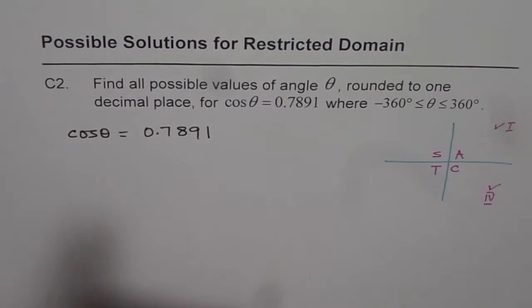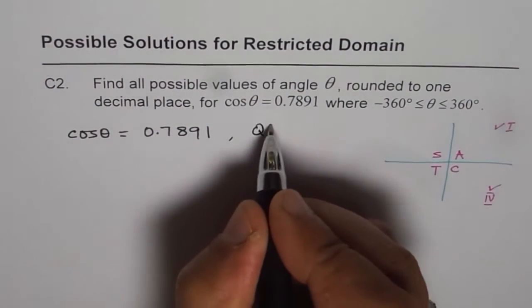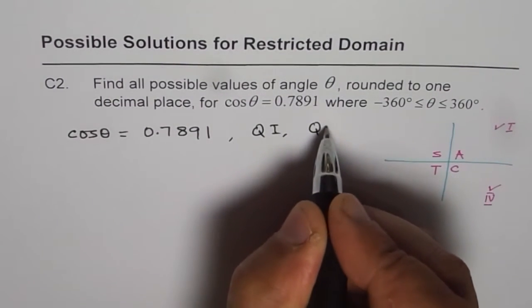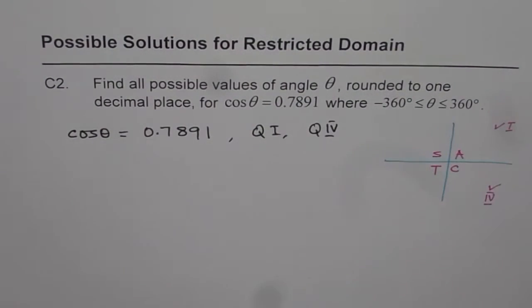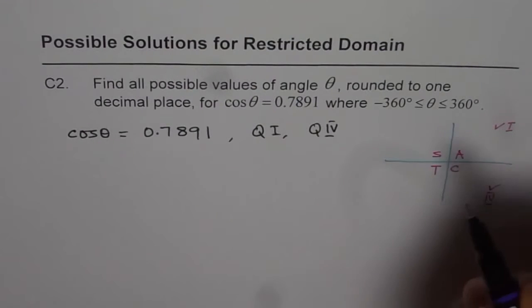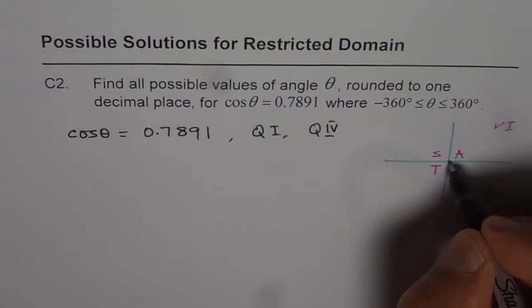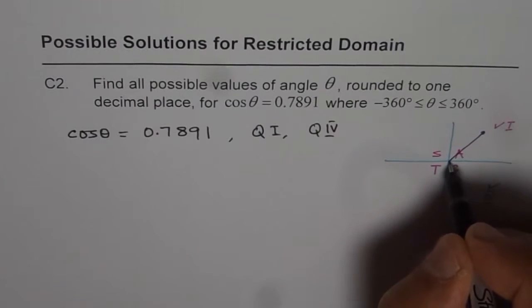First step is figure out coordinates in which the terminal arm should lie to find the value of theta. Now since cos is positive, it is quadrant 1 and quadrant 4. So these are the two coordinates in which theta should be, the principal angle theta will be our answer. So somewhere here, let us say somewhere here and somewhere there.